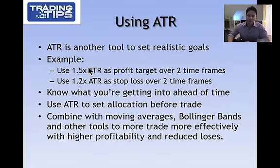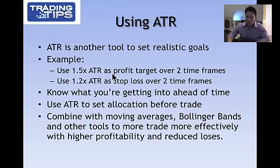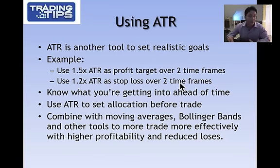Here's an example. Sometimes when a stock is breaking out, I'll use 1.5 times the average true range as my target. So if I'm a swing trader using a daily chart, I might use 1.5 times the daily ATR as my profit target over two days. On the flip side, I might use 1.2 times the ATR as my stop loss over two time frames. The goal here is I'm trying to make 1.5 times the ATR in two days — if the stock moves $2.50, I'm trying to make about $4 of profit.